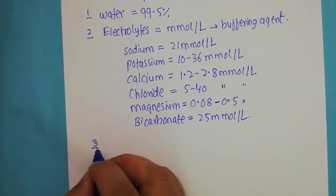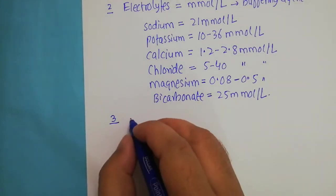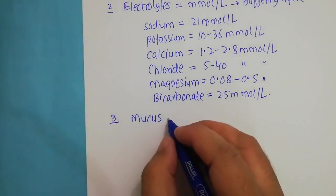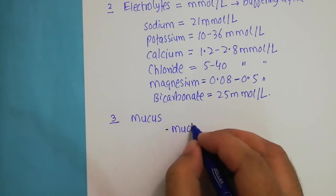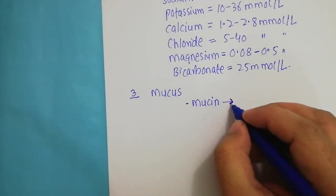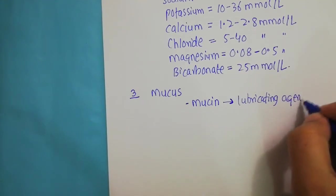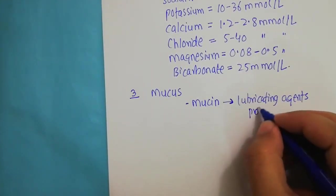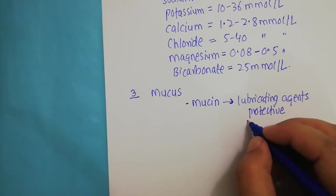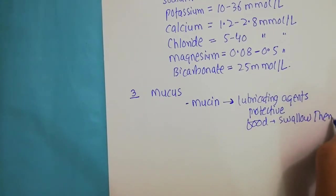The third important component of the saliva is mucus. This mucus contains important proteins, and the first important protein is known as the mucins. These mucins work as lubricating agents. They have a protective function — protecting the oral cavity — and another important function is acting as a lubricant for food so that you can swallow it easily. These are the important functions of these mucins.